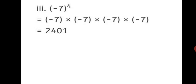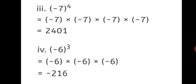Third sum: (−7) raised to the power of 4. Minus 7 is multiplied by itself 4 times, giving 2401. When a negative sign is multiplied 4 times, the answer is positive. Fourth sum: (−6) raised to the power of 3. Multiply minus 6 by itself 3 times: 6 sixes are 36, 36 into 6 is 216. Minus into minus is plus, and plus into minus is minus, so the answer is −216. When a negative sign is multiplied 3 times, the answer is negative.